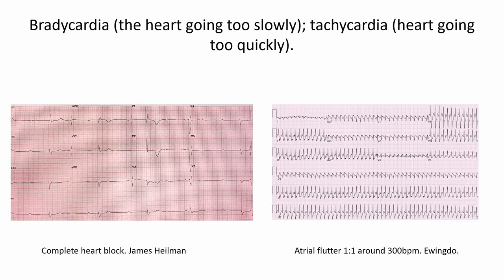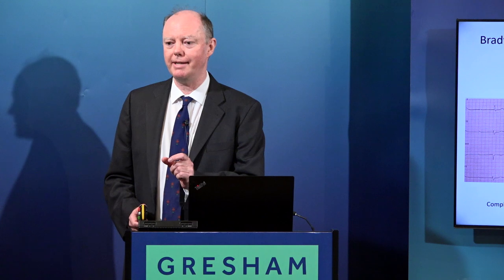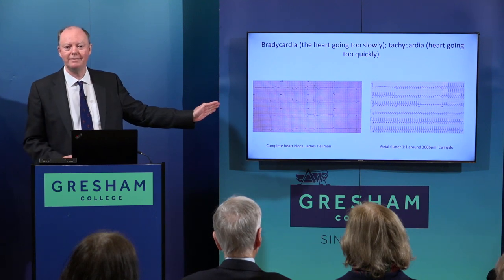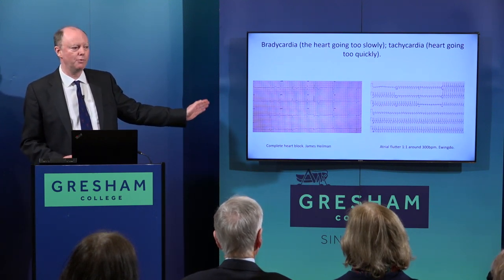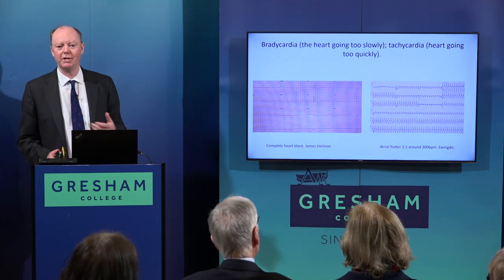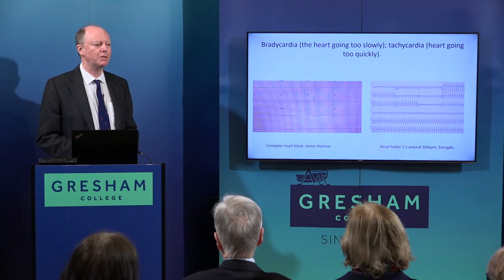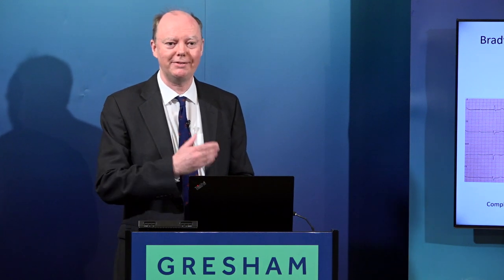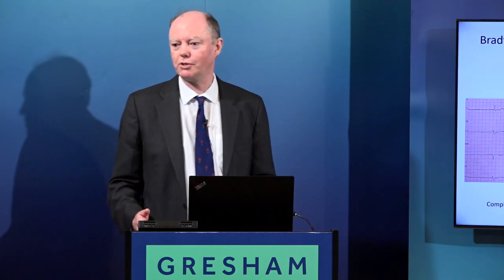Your heart can do one of two things that cause problems: it can go too fast or too slowly. ECGs everywhere in the world run at an exactly standard rate, so from the number of squares you can calculate exactly how fast the heart is going. The heart on the left is going very slowly — that's a bradycardia, abnormally slow. The heart on the right is going very fast — that's a tachycardia, again abnormal. Either will make your heart much less efficient than it should be.